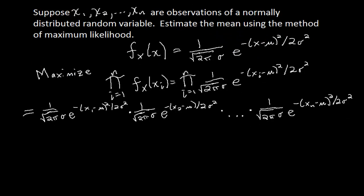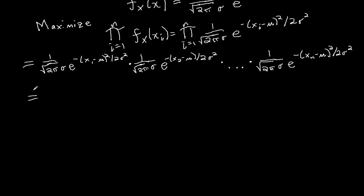Let me scroll down here. Now, if I do that, then look, I have n factors that all look the same. 1 over the square root of 2 pi sigma. So I'm going to have 1 over the square root of 2 pi sigma to the power of n. And then I have e to these n powers. Now, if I multiply e to a power by e to a power by e to a power, those powers can be added. So I have e to the power negative x1 minus mu squared over 2 sigma squared minus x2 minus mu squared over 2 sigma squared minus, and we keep going until we get to xn minus mu squared over 2 sigma squared.